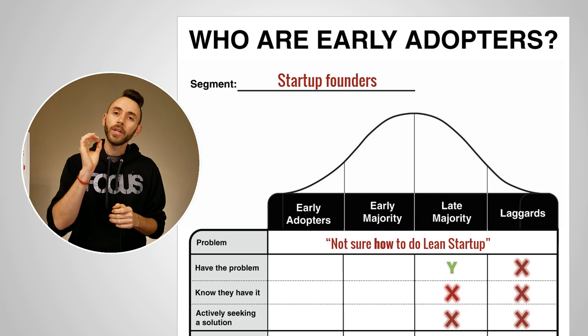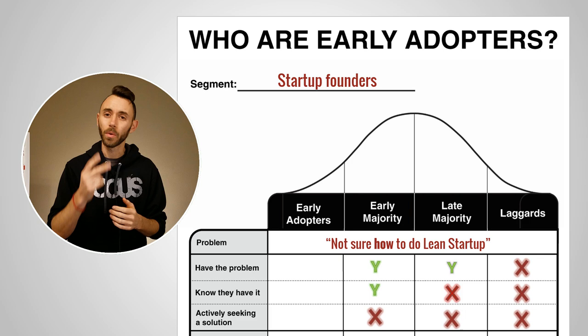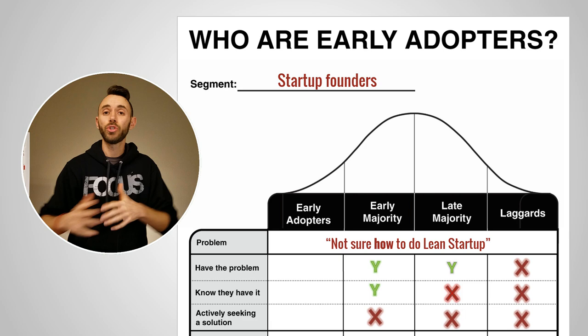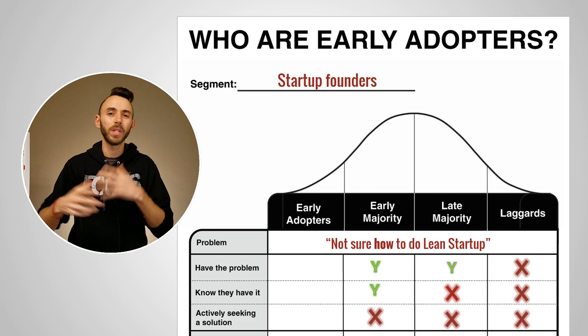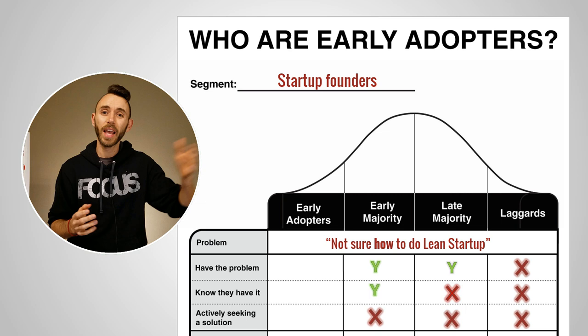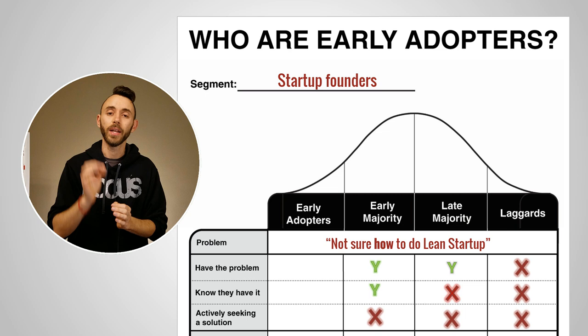The early majority are people who have the problem and know they have the problem, but are not actively seeking a solution. This is typically for one of two reasons. First, maybe they know they have the problem but it's not intense enough that they're actively seeking a solution — like someone who's just started reading The Lean Startup. The other reason is they've already been seeking a solution, haven't found one, and assumed there isn't one available. These are the people who will help you achieve product market fit, but you won't get them on board until you have your early adopters to convince them to go try the solution.